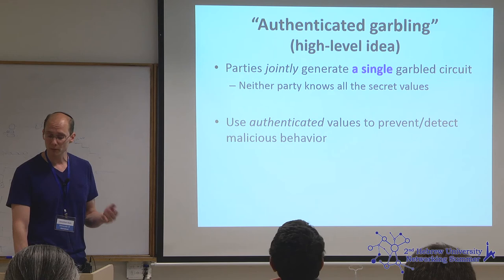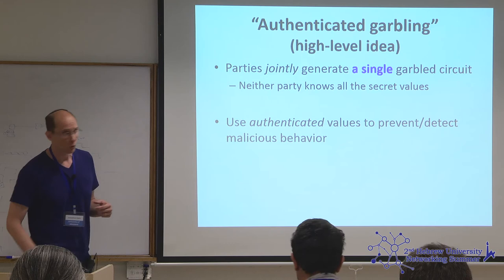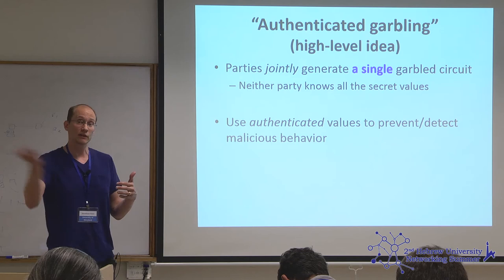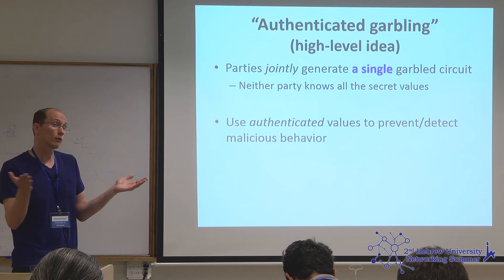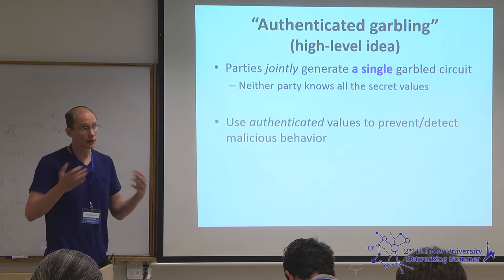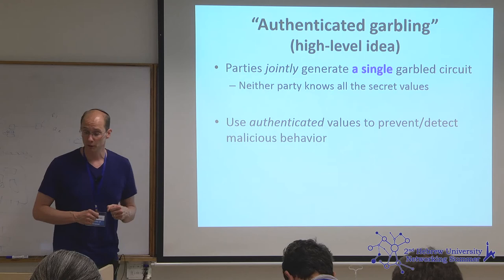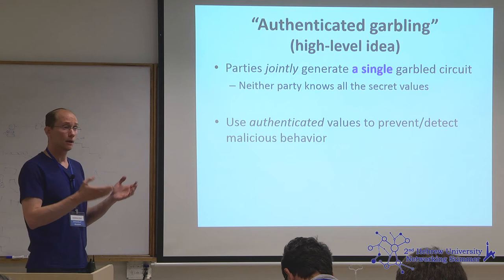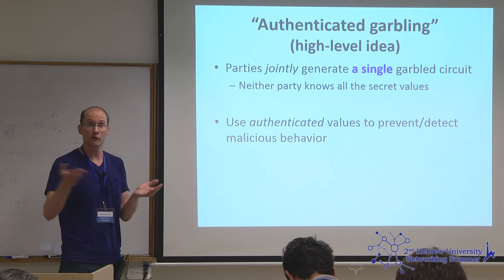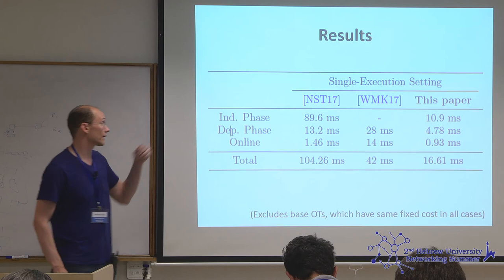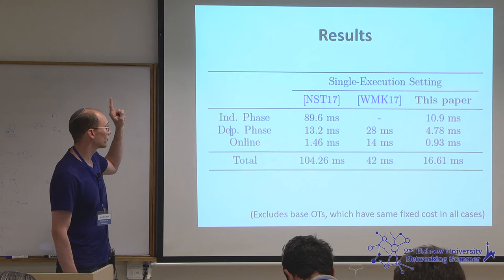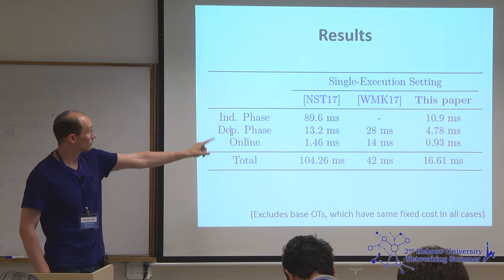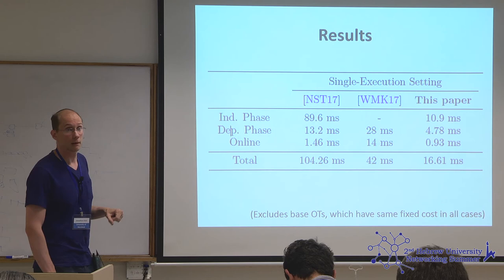Rather than one party computing ρ circuits and having them challenged, with authenticated garbling the parties work together in a pseudo secure computation protocol to generate a single garbled circuit, in such a way that neither party knows all the secret values inside it. We use authenticated values to prevent and detect malicious behavior: if they try to manipulate the structure of the circuit, they're very likely to get caught. This gives us improvements beyond the 2017 paper — in Eurocrypt 2017 we had 42 milliseconds for malicious AES evaluation; now we push it down to about 17 milliseconds.